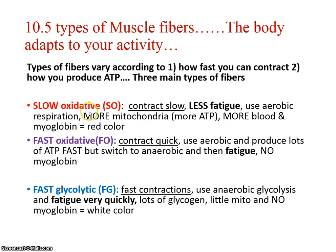Slow oxidative would make good posture muscles and muscles that work all the time but don't need to respond quickly. Fast oxidative might be in our legs for running and sprinting. Fast glycolytic might be something more in our arms.